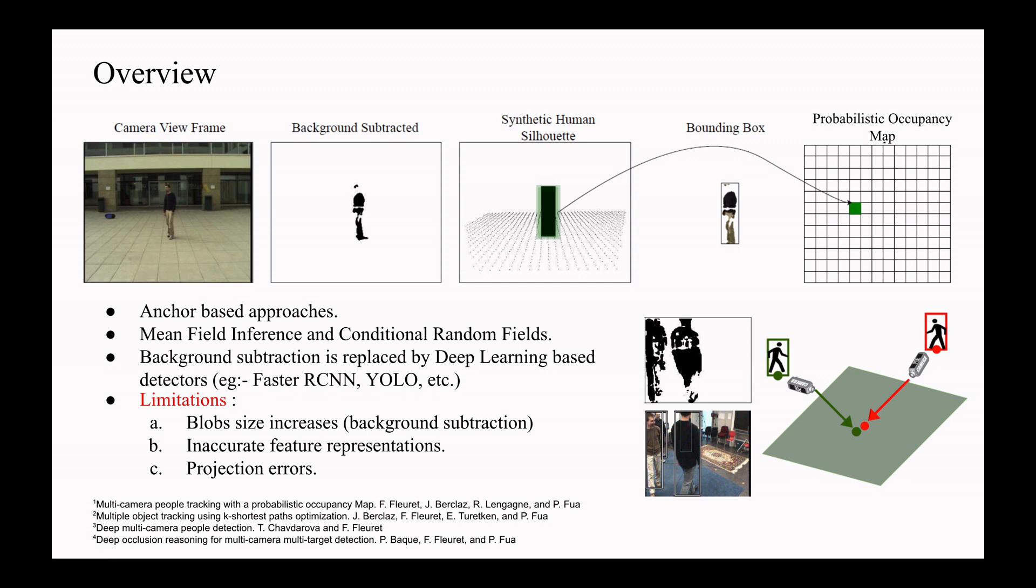Limitations of these methods. In case of severe occlusion, the size of the background-subtracted blob increases. Second, we get inaccurate feature representation from the detector. Third, we get projection errors on the top map from each of the views.